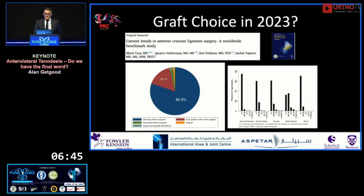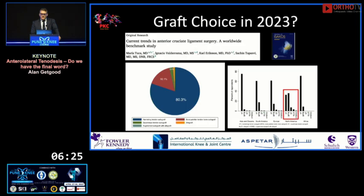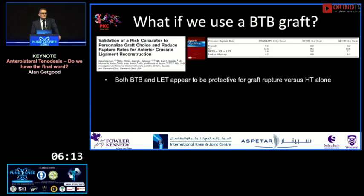A nice ISAKOS survey study by Maria Tuca showed the majority of surgeons are using hamstring tendons — 80 to 90% in the room use hamstring tendons — so the answer is probably clearly yes, you should be using an LET in this scenario. In North America, BTB is much more common than elsewhere, and many colleagues ask me: why would I do an LET if I use a BTB?